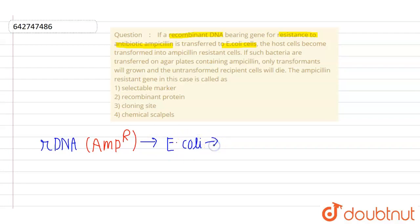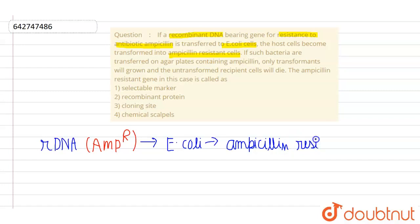After transferring the rDNA into E. coli, the host cells become transformed into ampicillin-resistant cells. So these E. coli cells now become ampicillin resistant.